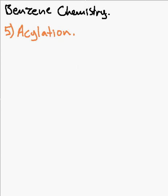Acylation is pretty similar to alkylation, in the sense that we have to use Friedel-Crafts reagent to rip off some sort of either a chloride or something similar. But we'll continue by trying to make the positive species, but obviously this time it's not just an R group we want.